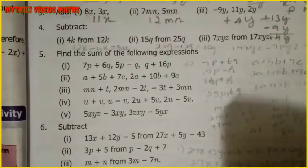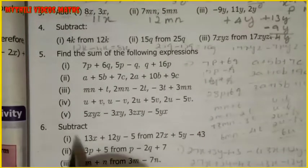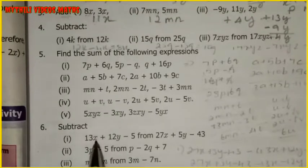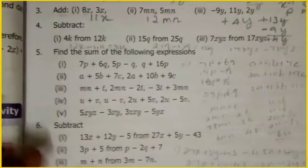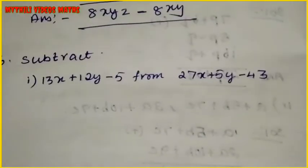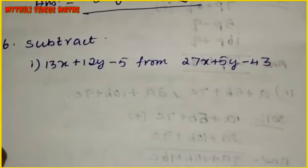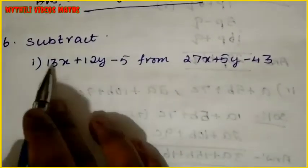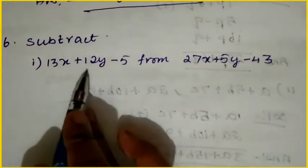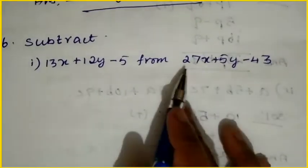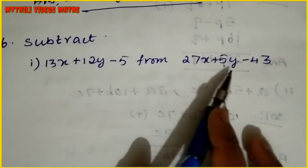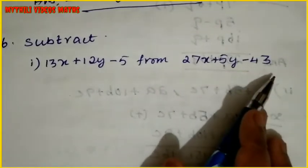The 6th sum is subtraction — we have to find it. Subtract this number from this number. The two algebraic expressions are given. The 6th sum is: subtract 13x plus 12y minus 5 from 27x plus 5y minus 43.